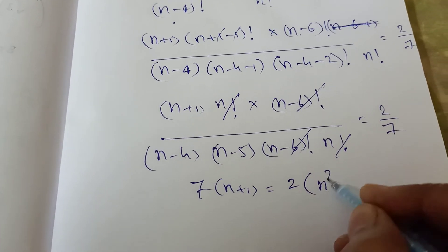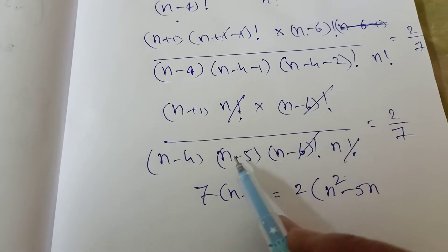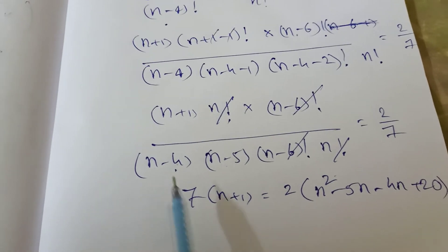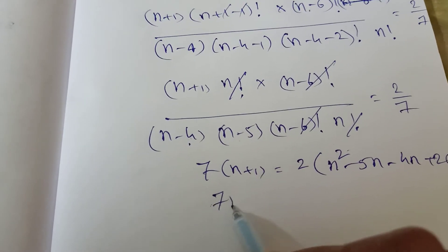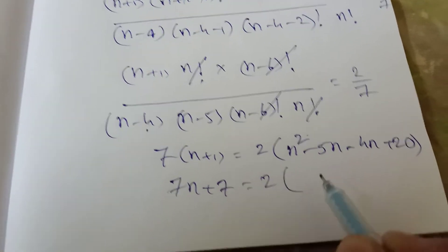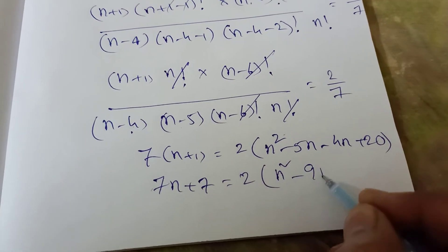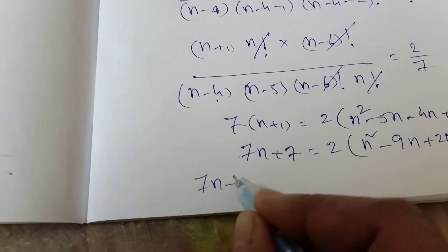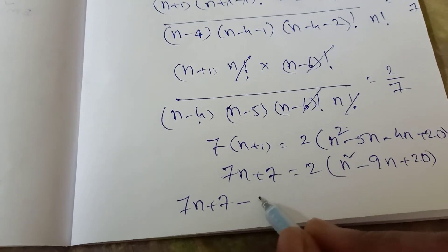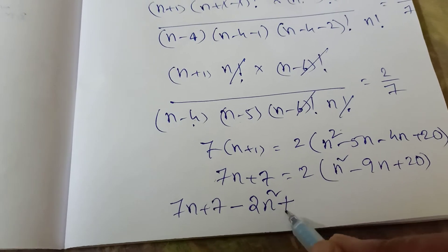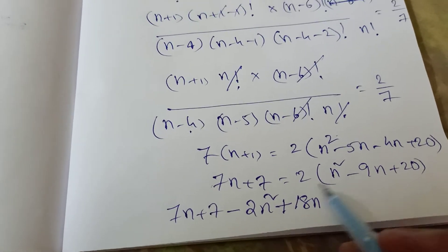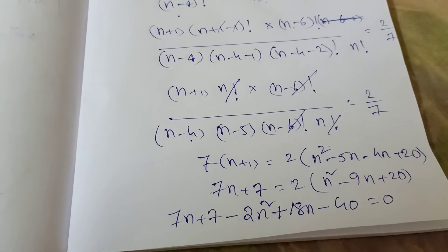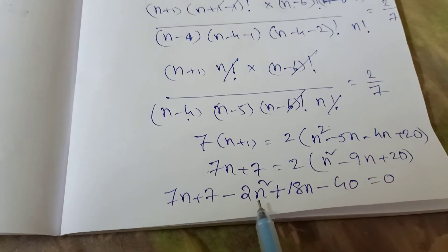Multiply out (n minus 4)(n minus 5): n squared minus 5n minus 4n plus 20 equals n squared minus 9n plus 20. Cross-multiplying: 7(n+1) equals 2(n squared minus 9n plus 20). That gives 7n plus 7 equals 2n squared minus 18n plus 40. Rearranging to one side: 2n squared minus 25n plus 33 equals 0.